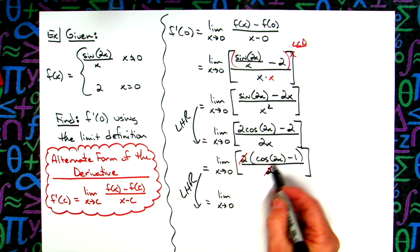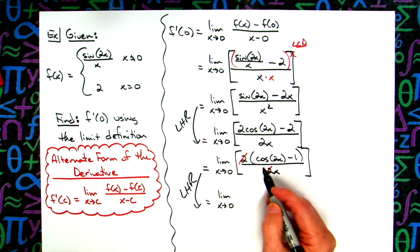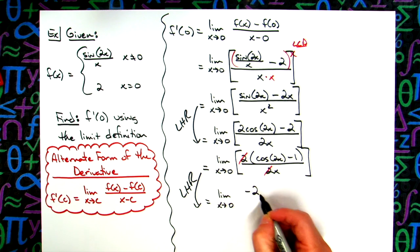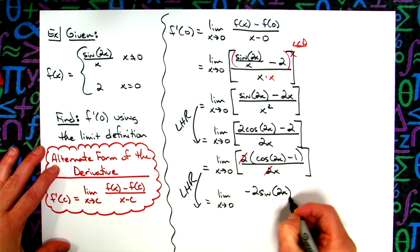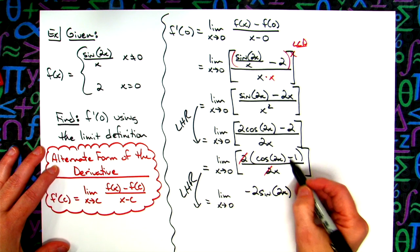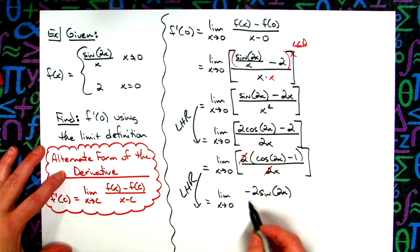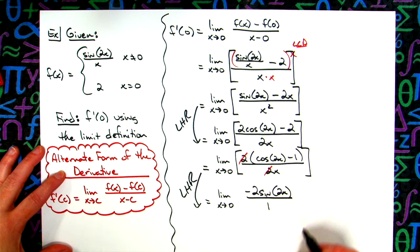So taking the derivative here, we'll have negative 2 sine 2x, not forgetting that chain. Derivative of the 1 goes away, derivative of the x on the bottom is just 1.